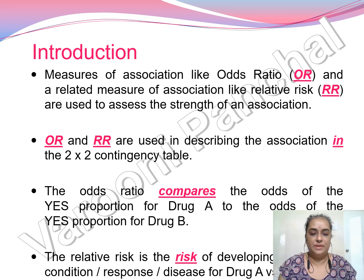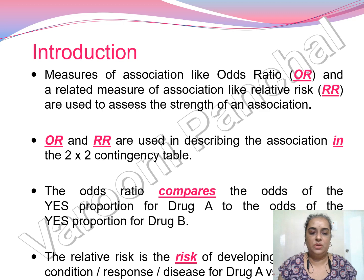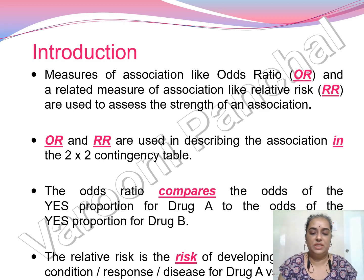The odds ratio compares the odds of the yes proportion for drug A to the odds of the yes proportion for drug B. Here drug is your medicinal product under investigation and the other product is your reference product already launched in the market. You have one variable called treatment with drug A and drug B, and a response variable with values yes or no — this is your two-by-two contingency table. The relative risk is the risk of developing a particular condition or response for drug A as compared to drug B.